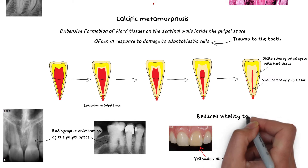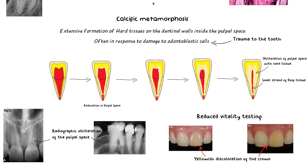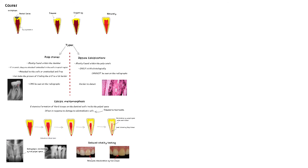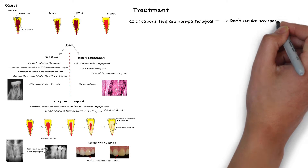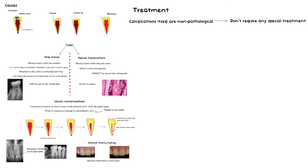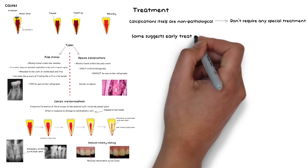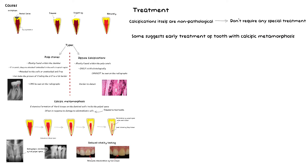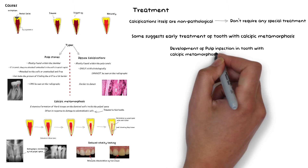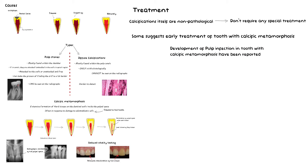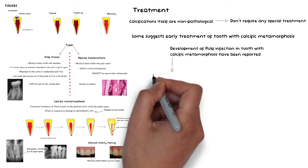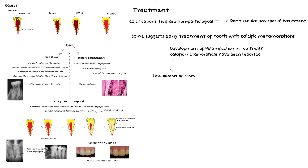There is also a reduced response for vitality testing of the tooth as well. Now, pulp stones, diffuse calcification, and calcific metamorphosis are not pathological in nature, and hence teeth that have these calcifications do not require any special treatment. Some authors however suggest treatment for a tooth that has undergone or is undergoing calcific metamorphosis. Even though late development of pulpal infection and necrosis in such teeth has been reported, many literature suggests the development of pulpal infection is less common compared to the endodontic complications that would be necessary to treat that tooth.